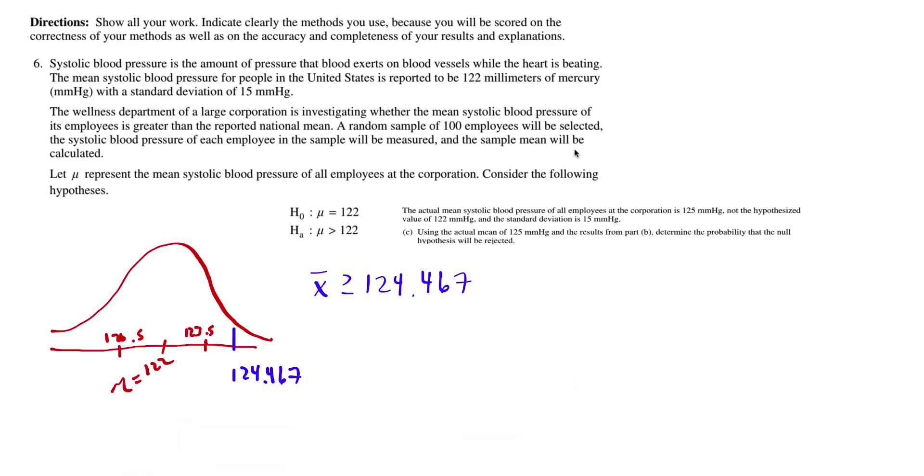On to part C. Using an actual mean of 125, so that's real life, 125. It's not 122, even though we're testing 122. The company wants to see if the employee's blood pressure is higher, and actually it's 125. So this curve here doesn't represent the real life curve. This is a situation where I have to draw the other curve.